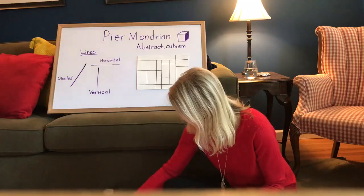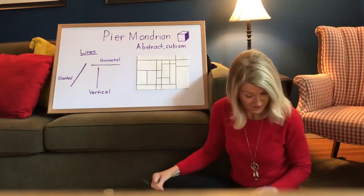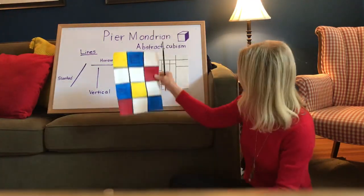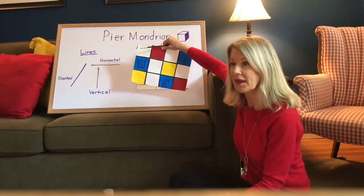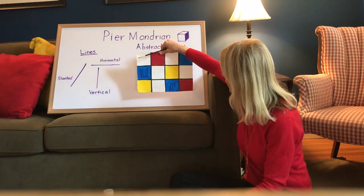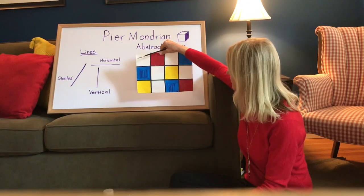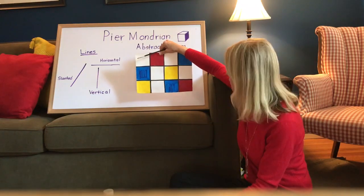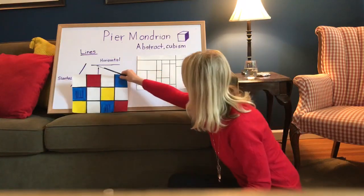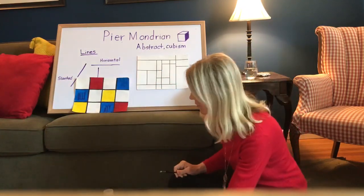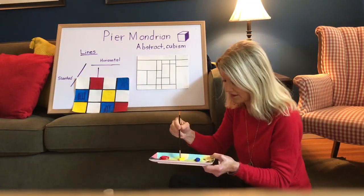One thing you'll notice about Pierre Mondrian's paintings — he left white spaces. He didn't paint every square. You could do another painting where you painted all the squares, that would be fun too, but for him he wanted to leave some white space because it kind of shows the bright colors a little bit more. He used white and black too. So if you want to do a Pierre Mondrian painting in that style, you don't want to color all the squares.